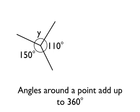Let's look at one more example. In this case, I've got one unknown angle, angle Y, which I'm going to calculate. There are also two other angles: 150 degrees and 110 degrees. Let's use the fact that angles around a point add up to 360 degrees to calculate the size of angle Y.